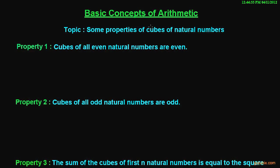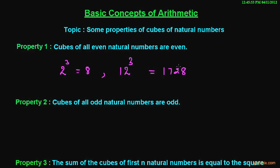Here is the first property: cubes of all even natural numbers are even. Suppose we have an even natural number 2 and if we find the cube of 2, then it will be 8, and we know that 8 is also an even number, so the property is true. Let us take another example: suppose we have an even number 12, and if we calculate the cube of 12, then it will be 1728, and we observe that 1728 is also an even number, so the property is true.